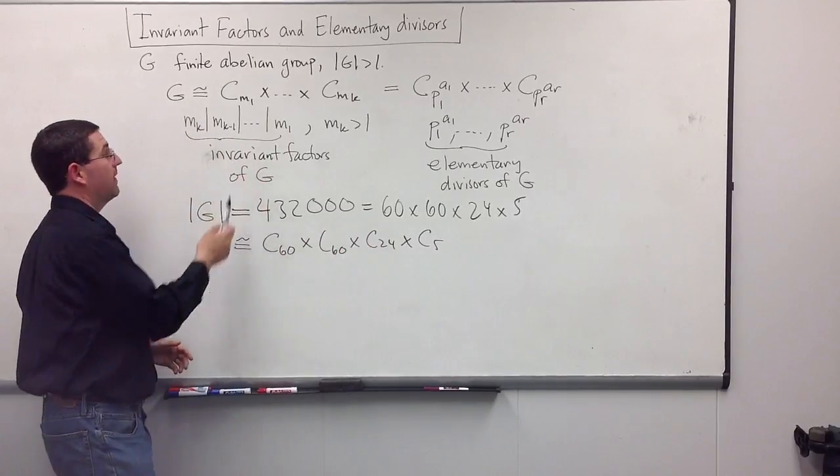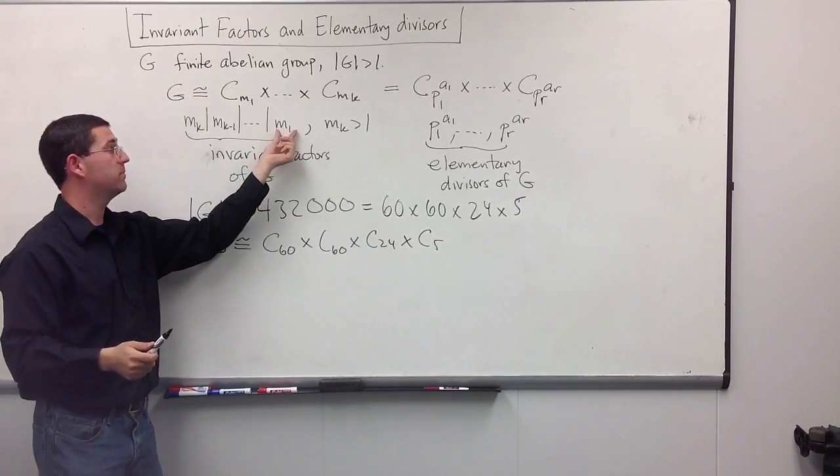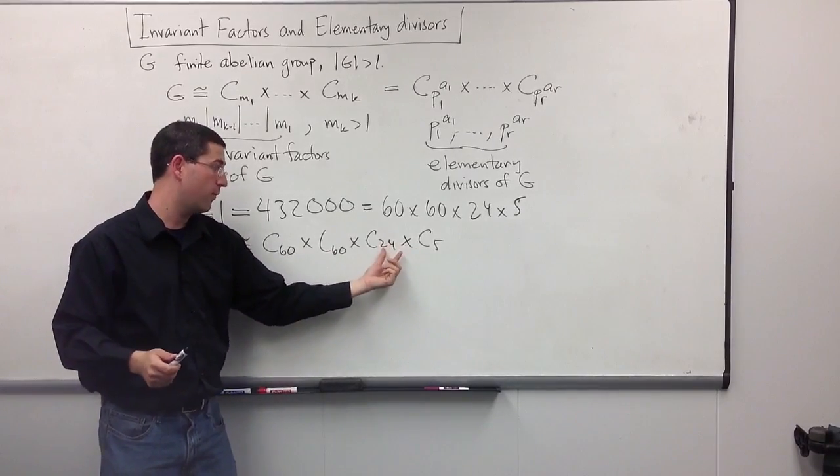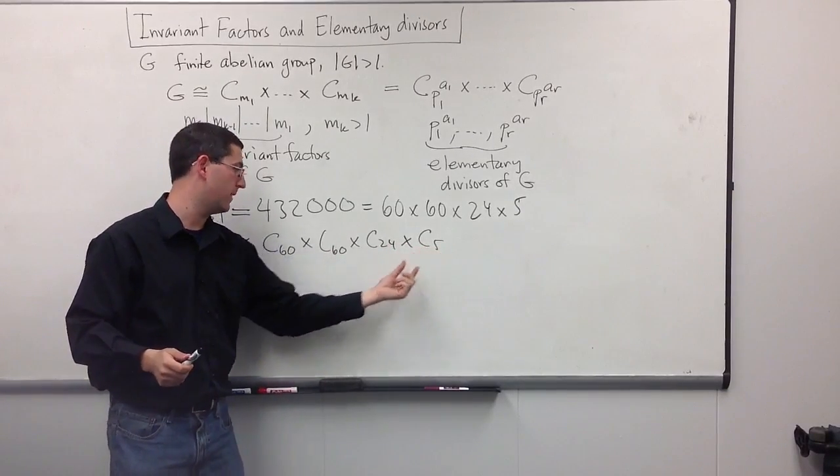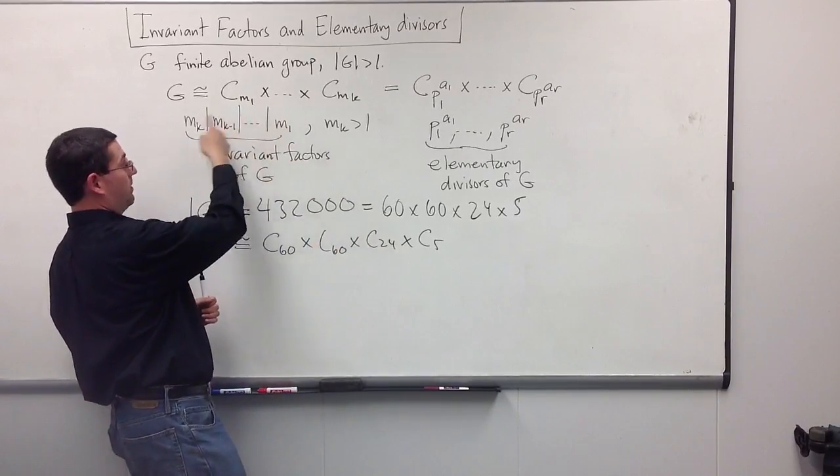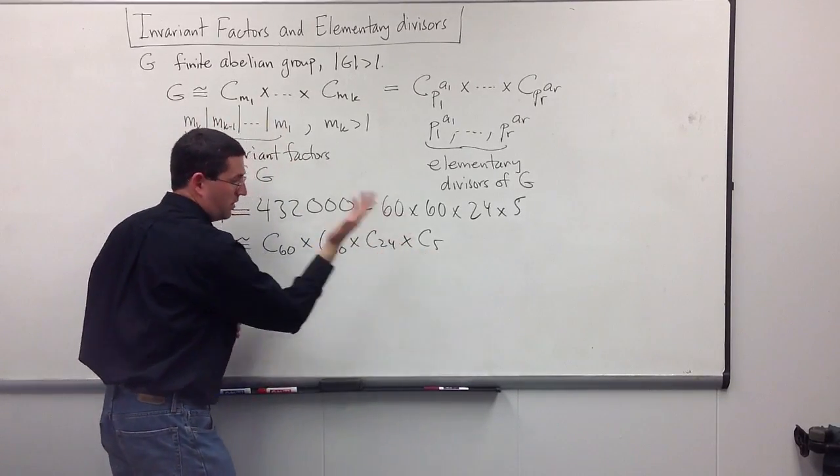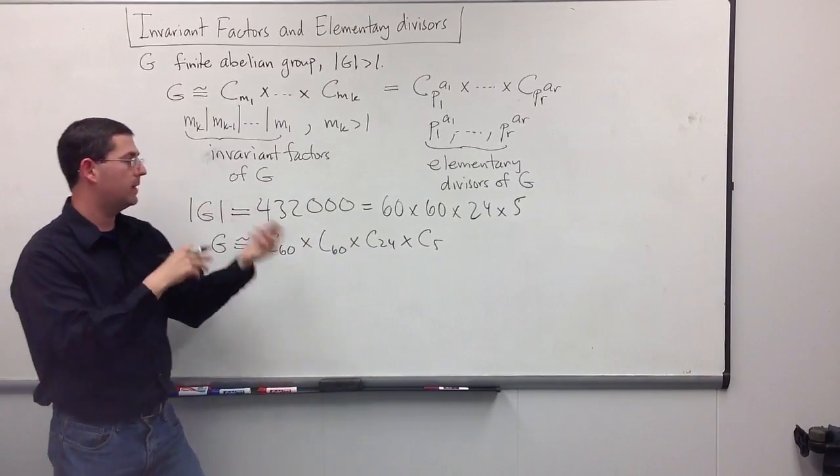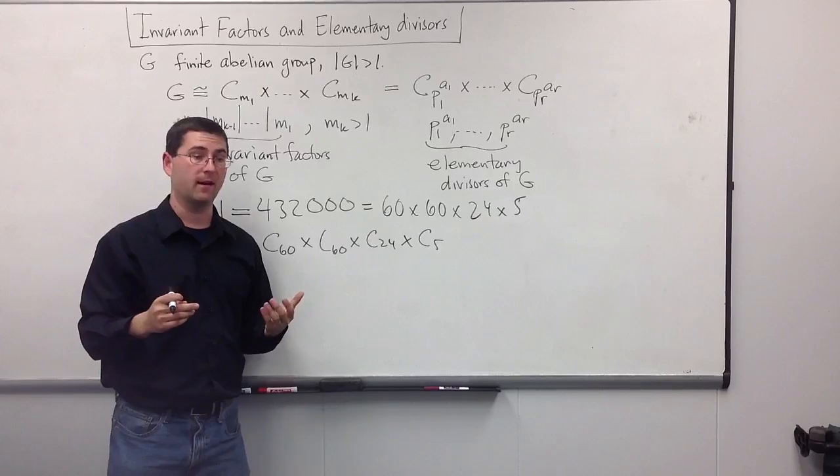Remember, with the invariant factors, the biggest one should be a multiple of everything else. Well, that's not what happens here. 24, for instance, is not a multiple of 5. And, not just the biggest one, but each one has to divide the other one. So, 5 doesn't divide into 24. So, these aren't invariant factors, either.